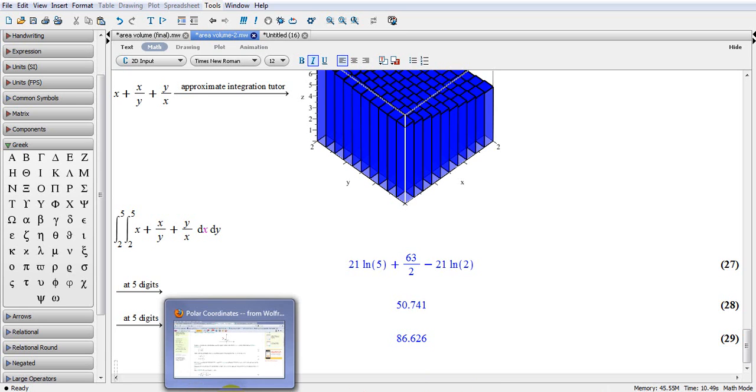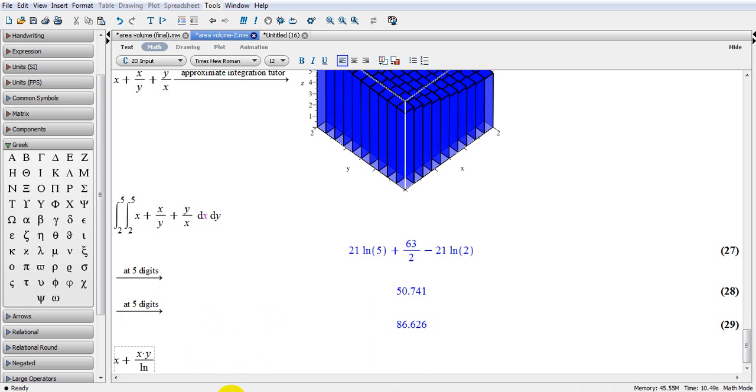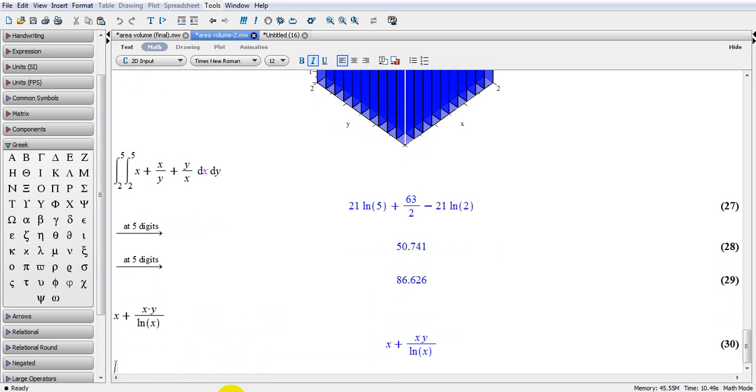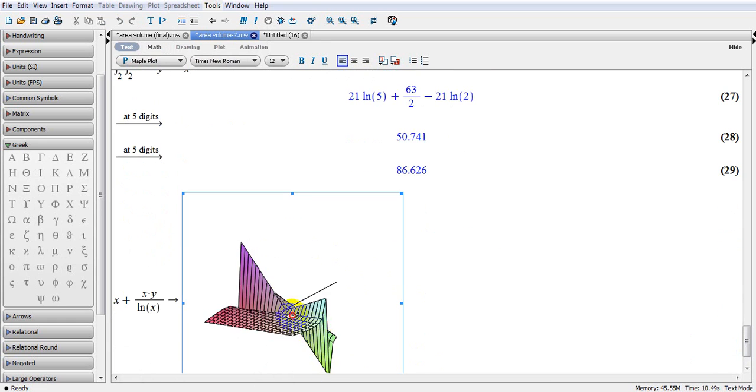Let's start with something a little more basic. So we have X plus X multiplied by Y divided by ln X. This is my function here. I'm going to plot this function simply. I go here, right click, plot, and 2D, X, Y, and this is how it looks like.